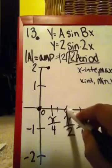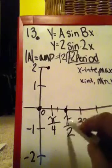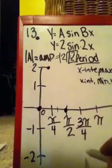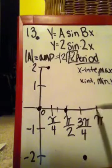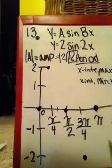Our x-intercept, again, is π over 2. Our minimum is at negative 2. And we're back to π at our x-intercept.